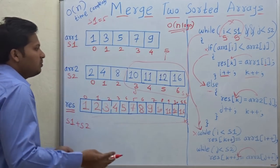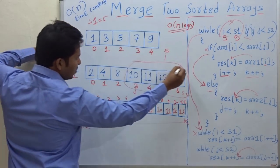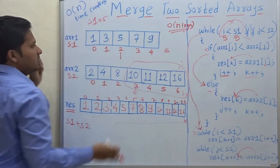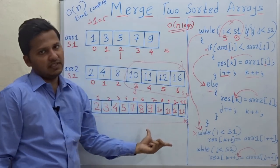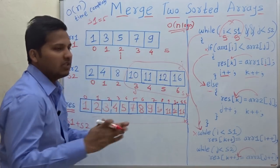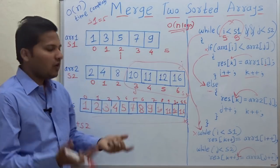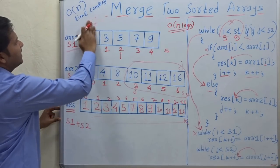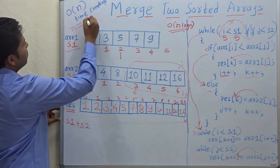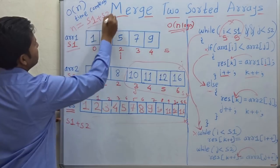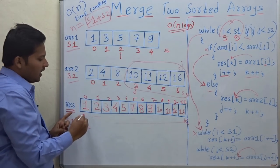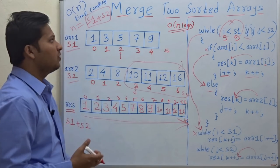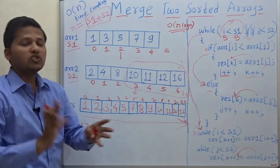In some cases j will exhaust first. If j reaches the end of the array while i is still somewhere in the middle, all the remaining elements of Array 1 are copy-pasted into the final array. The time complexity is O(s1 plus s2), i.e., O(n) where n equals s1 plus s2 — the size of the resultant array — because we traverse the resultant array size. This algorithm can also be extended to merge multiple sorted arrays into one sorted array.